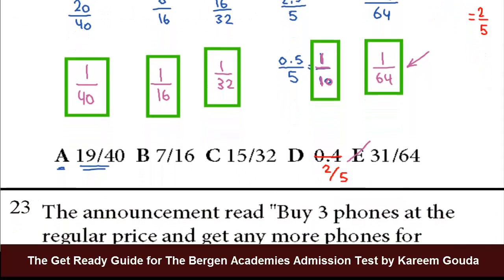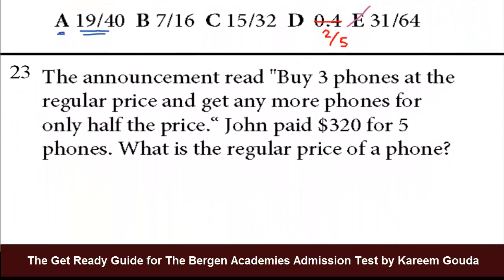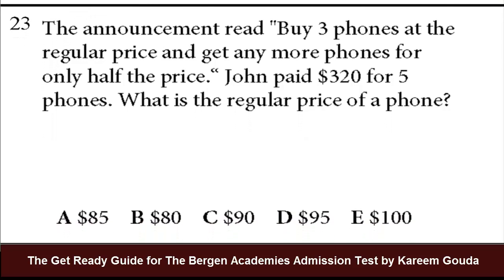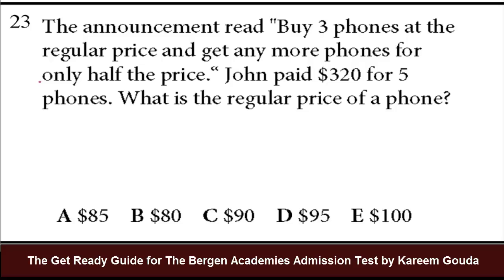Let's do number 23. The announcement read, buy three phones at the regular price and get any more phones for only half the price. John paid $320 for five phones. What is the regular price? So the announcement says, buy three phones at the regular price. So three phones times P, which is the price. And get any more phones for only half the price. Now we know that John bought five phones. That means he bought three for the regular price and he bought two at half price.